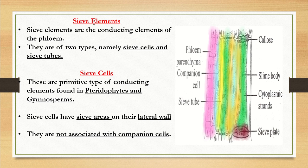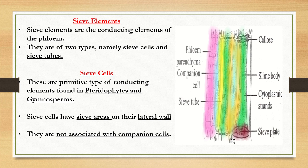As you can see in the picture, the yellow-colored region is the sieve tube, which is associated with companion cells. The blue-colored region is the companion cells, which contain a prominent nucleus and cytoplasm. So sieve tubes are associated with companion cells, but sieve cells are not. Sieve cells contain the sieve area on their lateral walls.